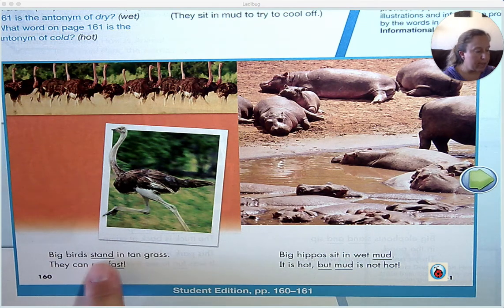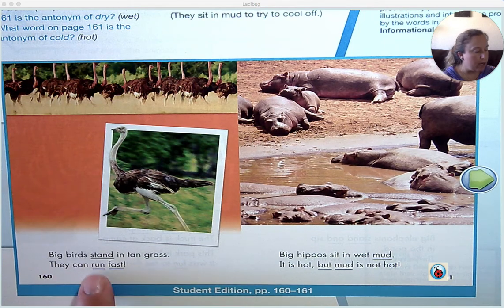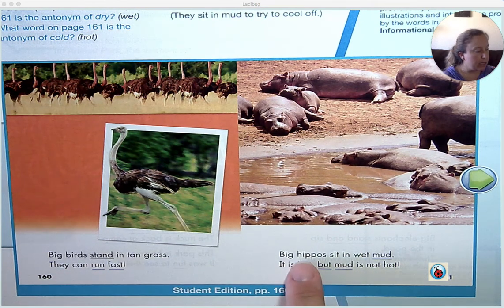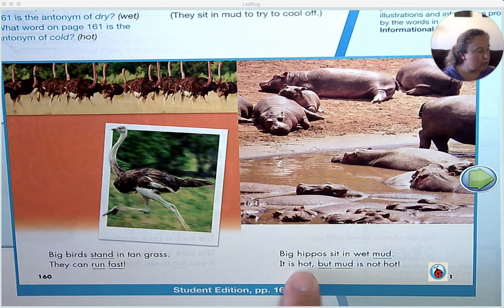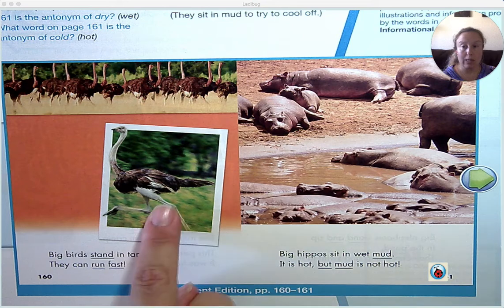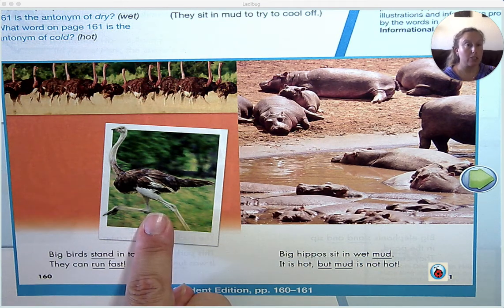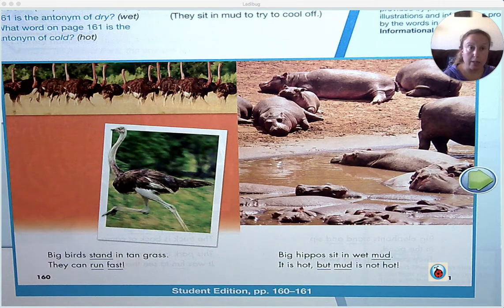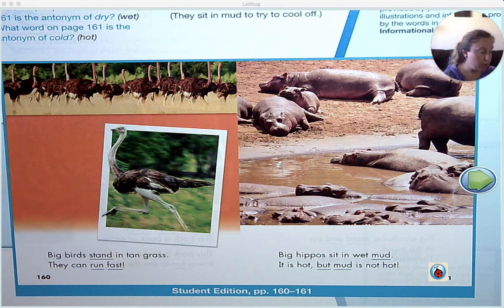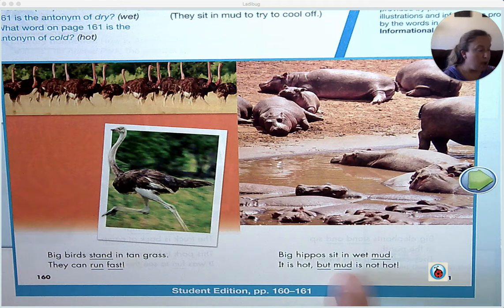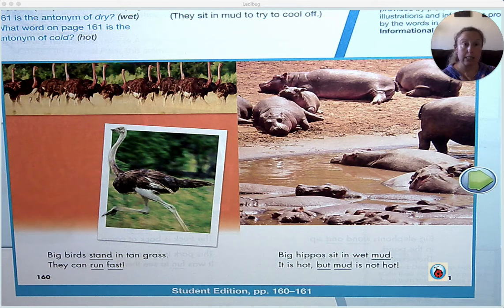Big birds stand in tan grass. They can run fast. Big hippos sit in wet mud. It is hot, but mud is not hot. Do you know what this animal is? It's an ostrich. Why do hippos like the water and mud? That tells you about the weather and climate of Africa where they live. Africa can be quite warm, especially where the hippos live, so they like to live near mud and wet areas. The mud is not hot, so it actually keeps them cool. They also put mud on their bodies as a natural way to protect against the sun — like hippo sunblock.